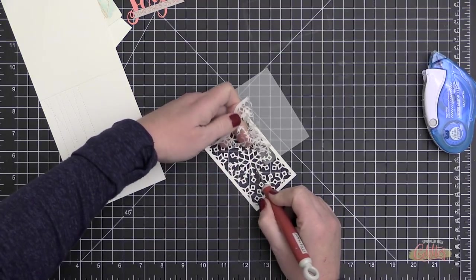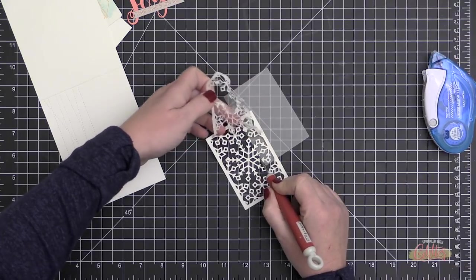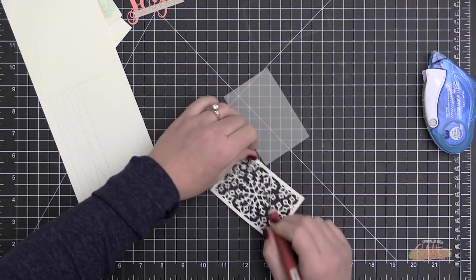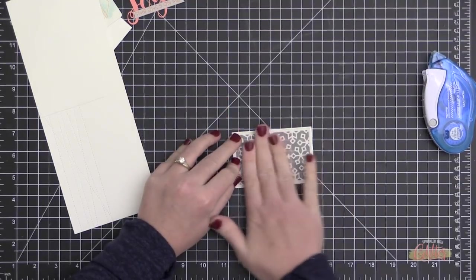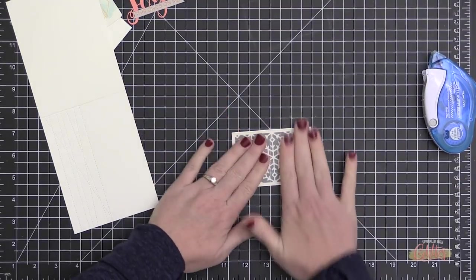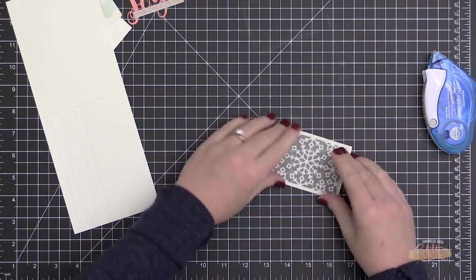Now I am taking off the backer on this Snowflake Window die cut. I die cut it from the Stick It adhesive-backed cardstock that I created earlier, and I'm adhering it to just a plain piece of vellum.